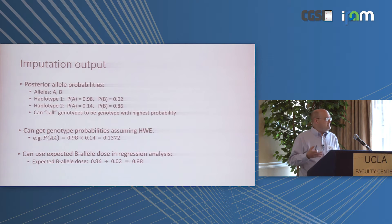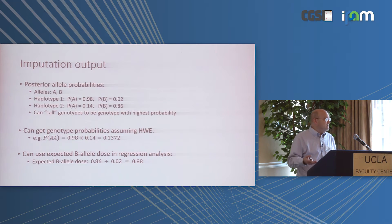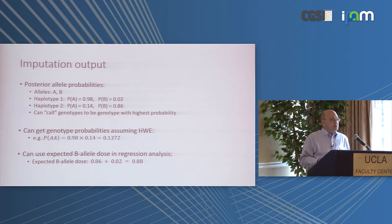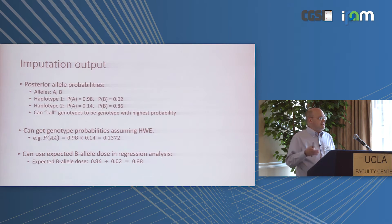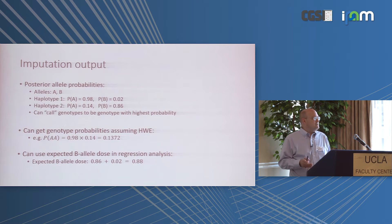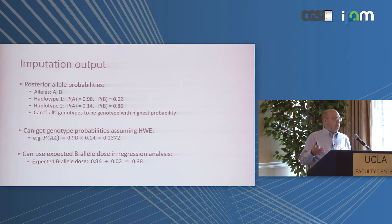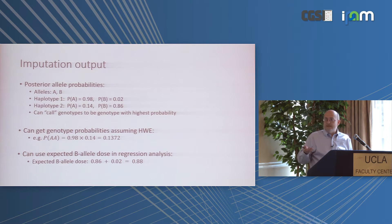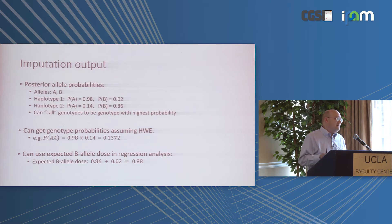With probabilistic genotypes, you can use them in standard frameworks for testing. In linear regression, the predictor at a marker is typically the number of copies of the minor allele: 0, 1, or 2. That same framework works with imputed data — instead of an integer number of copies, you use the expected number of copies, sometimes referred to as the expected dose of the allele. In this example, the B allele dose turns out to be 0.88.